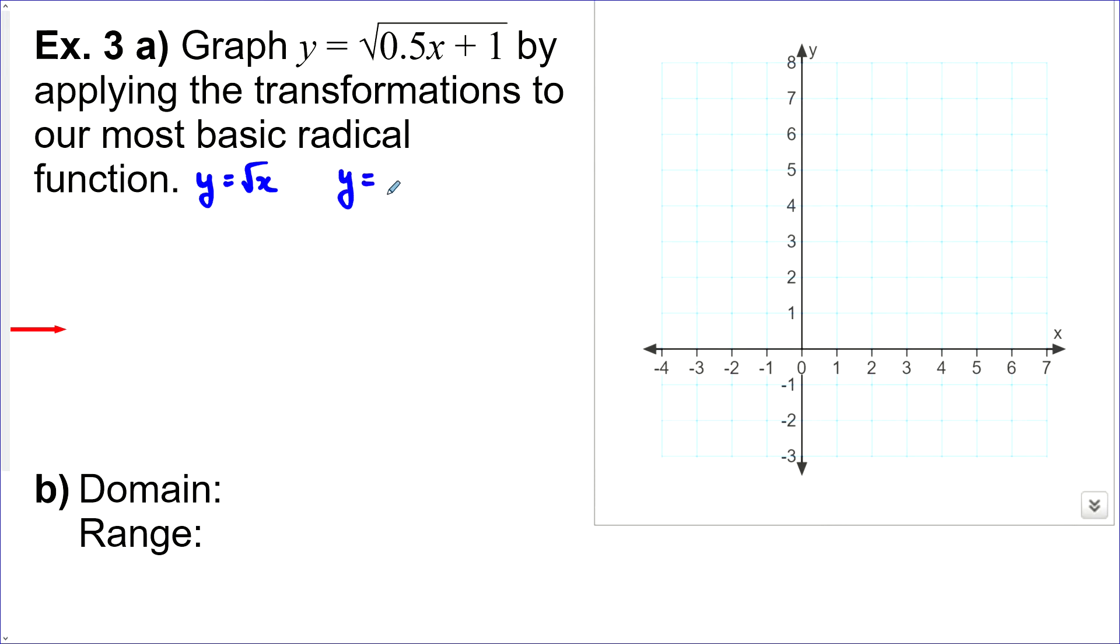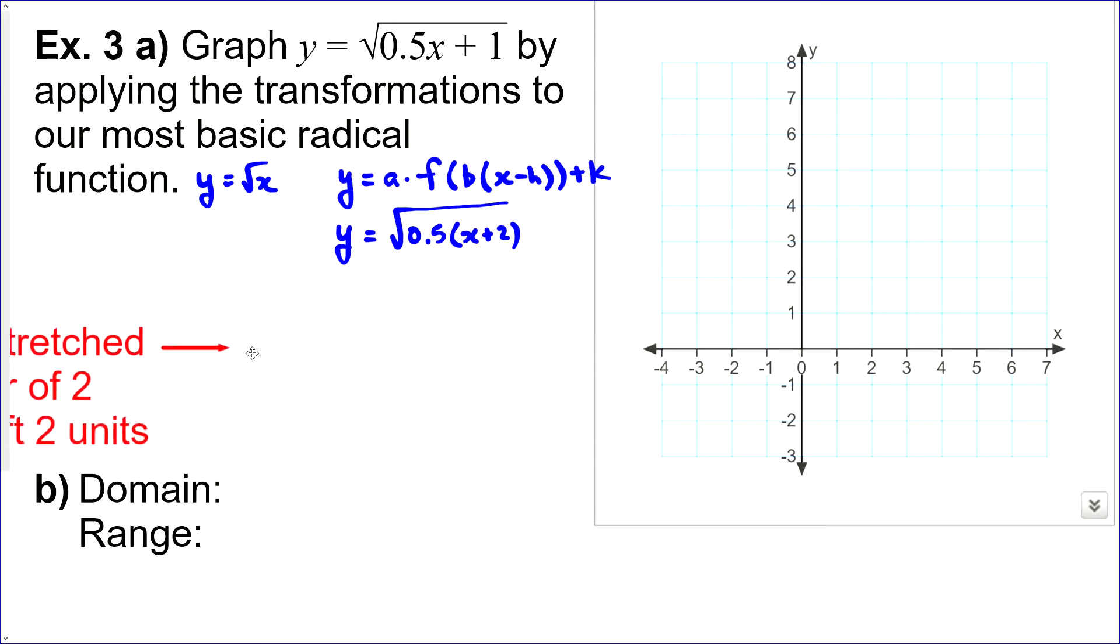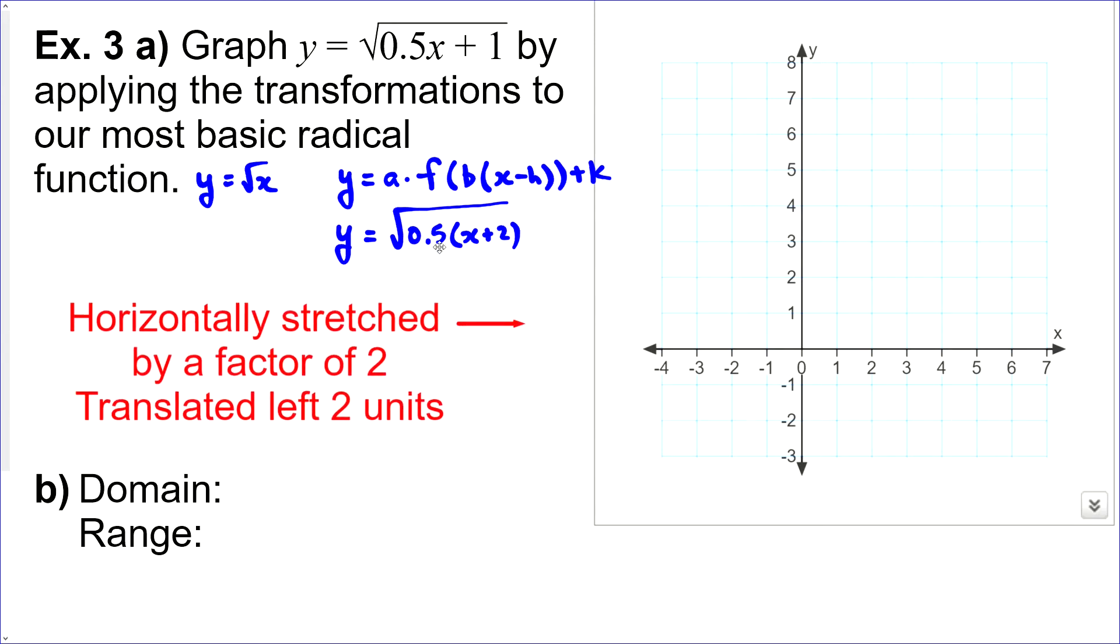So, when we want to see our transformations, this needs to be factored out. So, normally we would have it like this. a is out there, and then b is here. And it's factored out from our x minus h here. Okay? So, that's very important. So, we're not moving one unit to the left, as you will see. We are factoring the 0.5 out. And when we do that, this turns into a plus 2. So, we're actually horizontally stretching it by a factor of 2 and translating left 2 units. And that's why it's very important to remember you've got to factor this out.